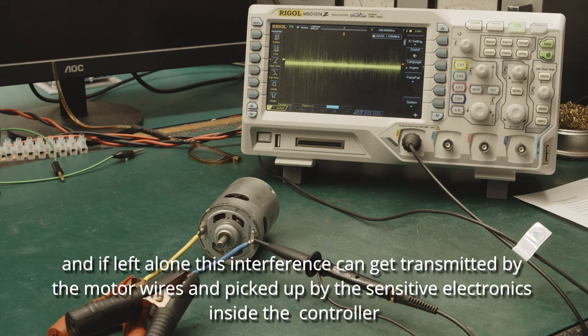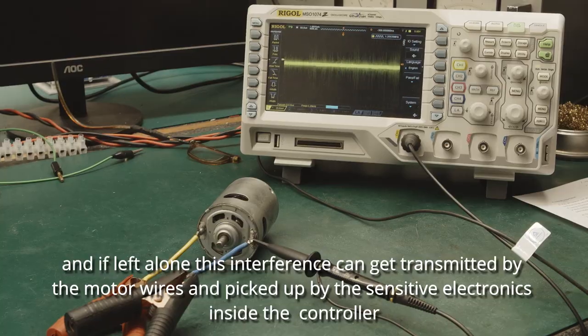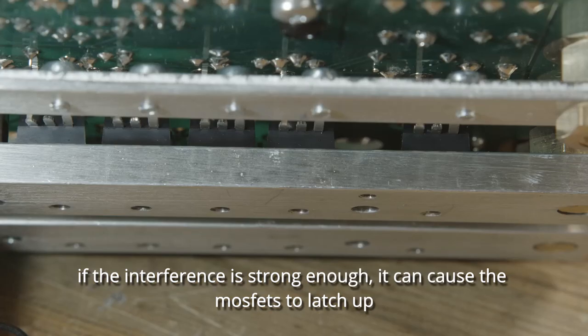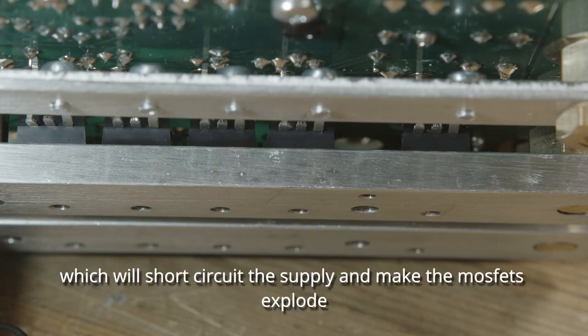And if left alone this interference can get transmitted by the motor wires and picked up by the sensitive electronics inside the controller. If the interference is strong enough it can cause the MOSFETs to latch up which will short circuit the supply and make the MOSFETs explode.